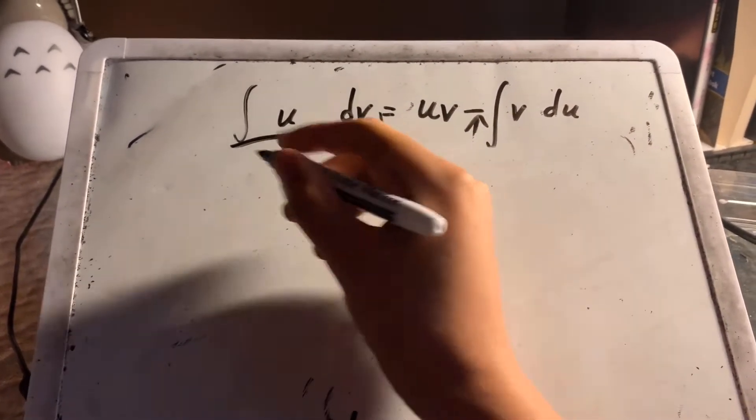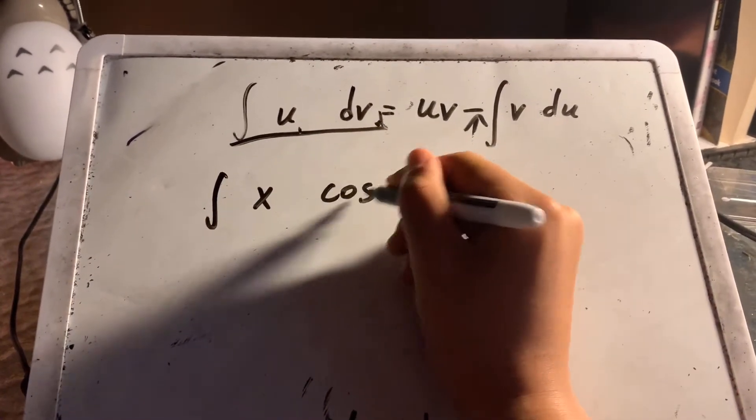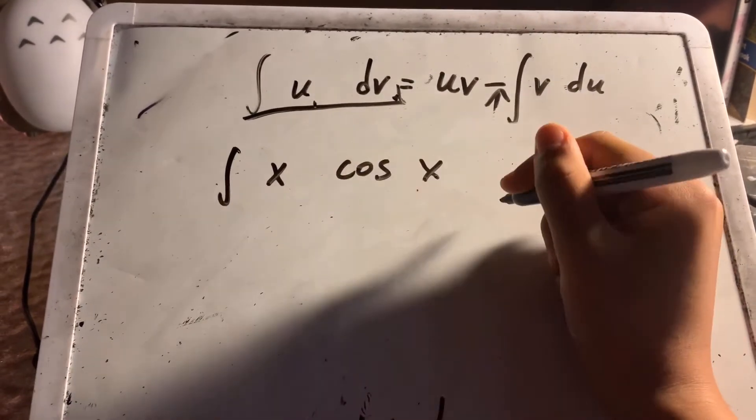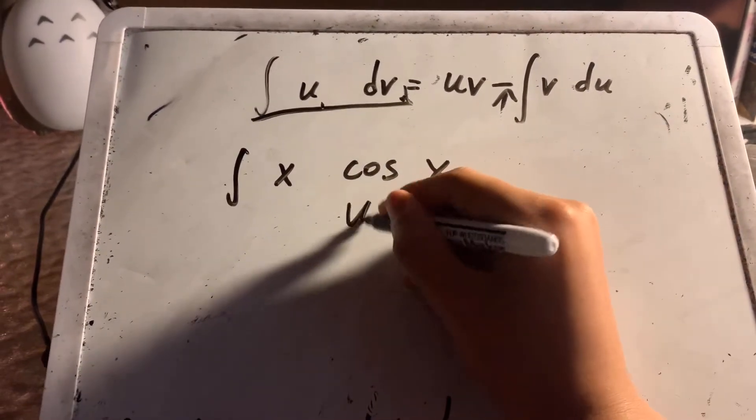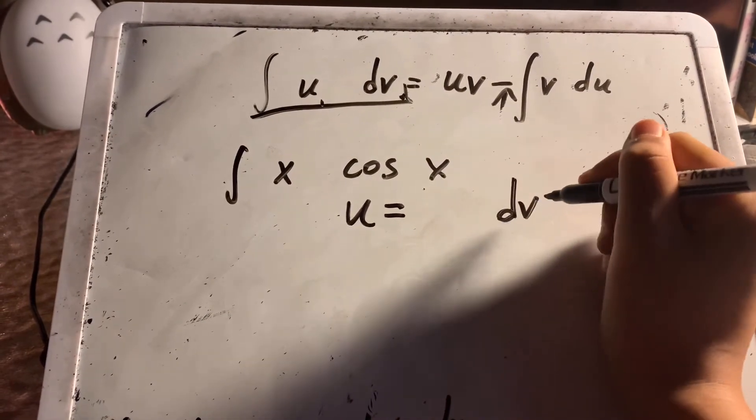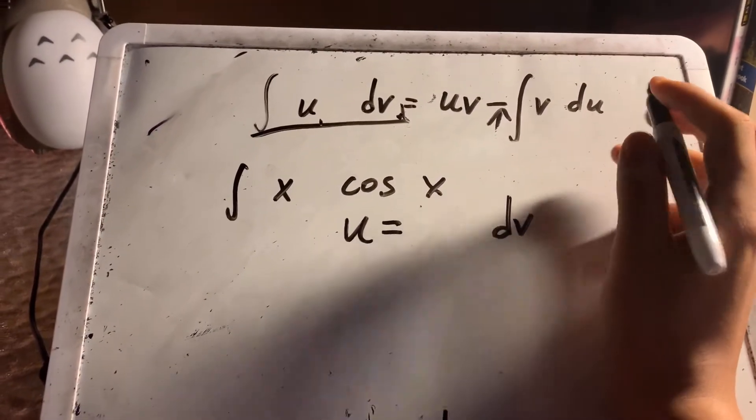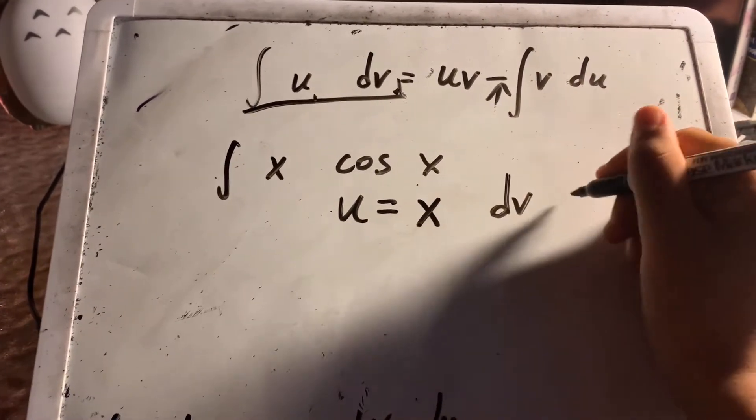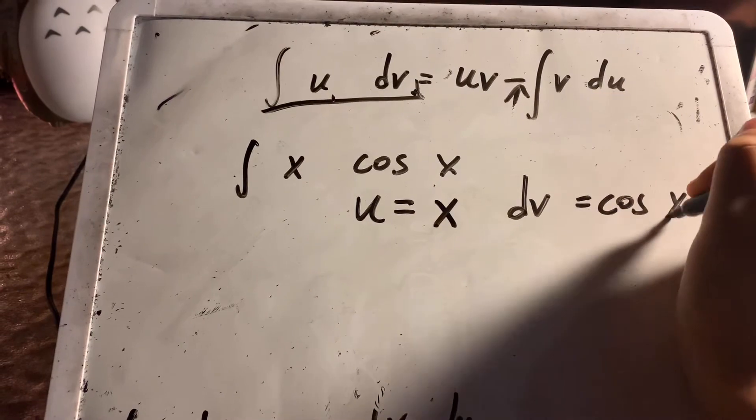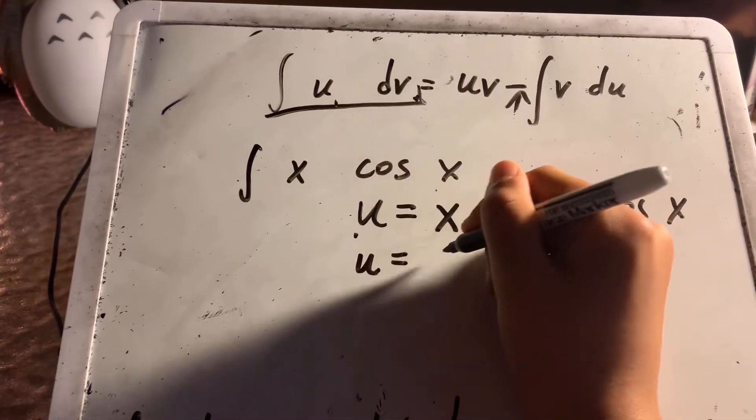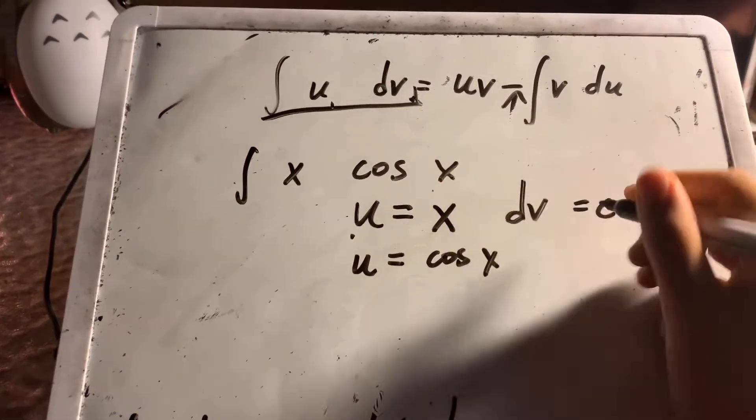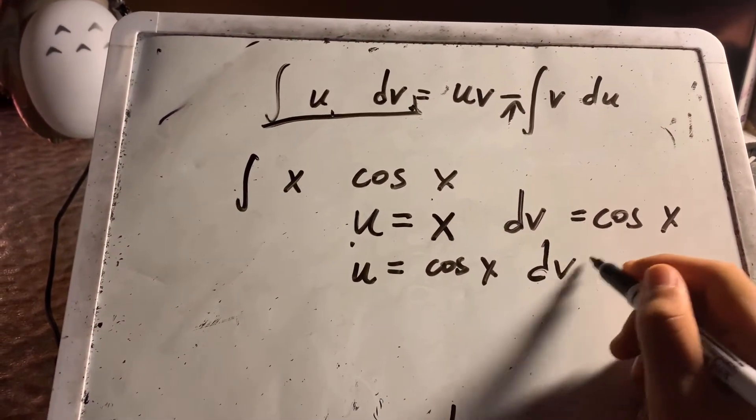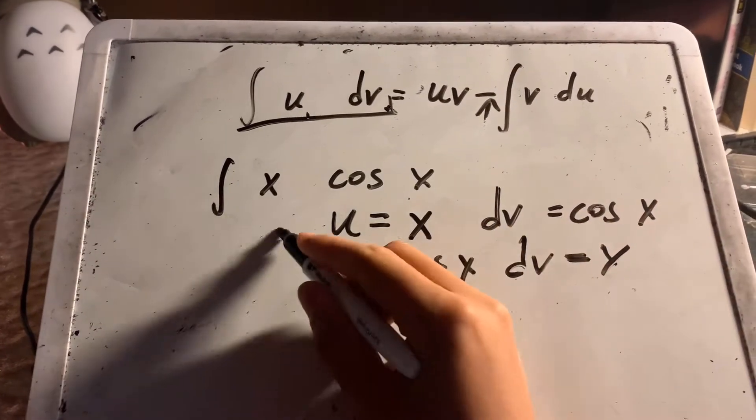So that's given, x cosine x, right? It is required that you need to solve u is equal to something or dv is equal to something. In this case, I suggest you, there are two ways to do it. u is equal to x and dv is equal to cos x, or u is equal to cos x and dv is equal to x. Let's try the first way first.